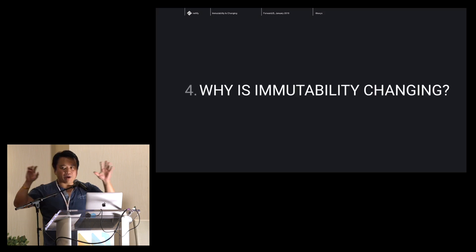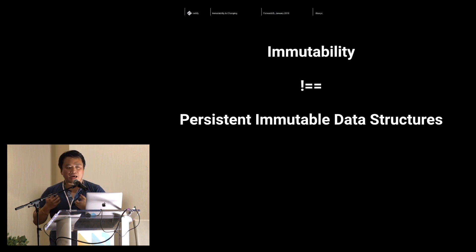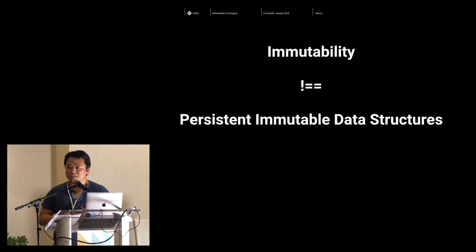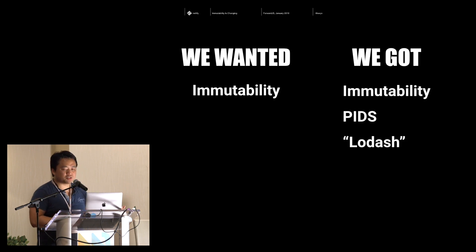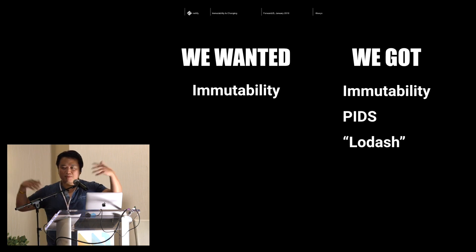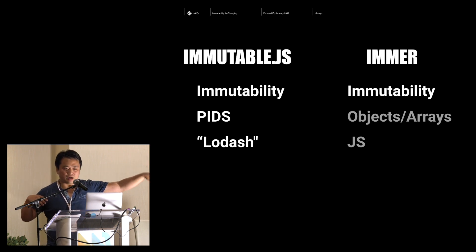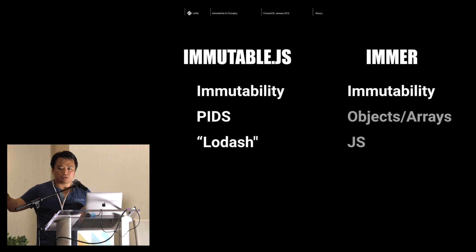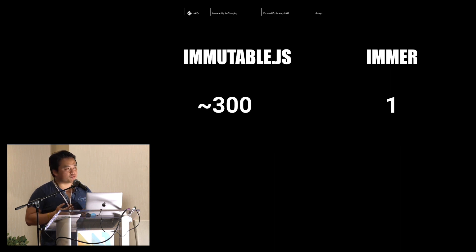I want to step back and ask: why is immutability changing, and what have we learned? The core realization in the immutable community is: immutability is not equal to persistent immutable data structures. We wanted immutability, we were sold on immutability, and we got ImmutableJS. Unfortunately, that was a bundle of different things — there's immutability, but then there's also the persistent data structures, and then there's this poor man's Lodash you can see with all the APIs and helper utilities. What Immer came along and did was: keep the immutability, but instead of persistent immutable data structures, just use regular JavaScript objects and arrays. And instead of Lodash, just use all the regular JavaScript stuff you already know. ImmutableJS has about 300 different APIs. Immer has one — and you've already memorized it.